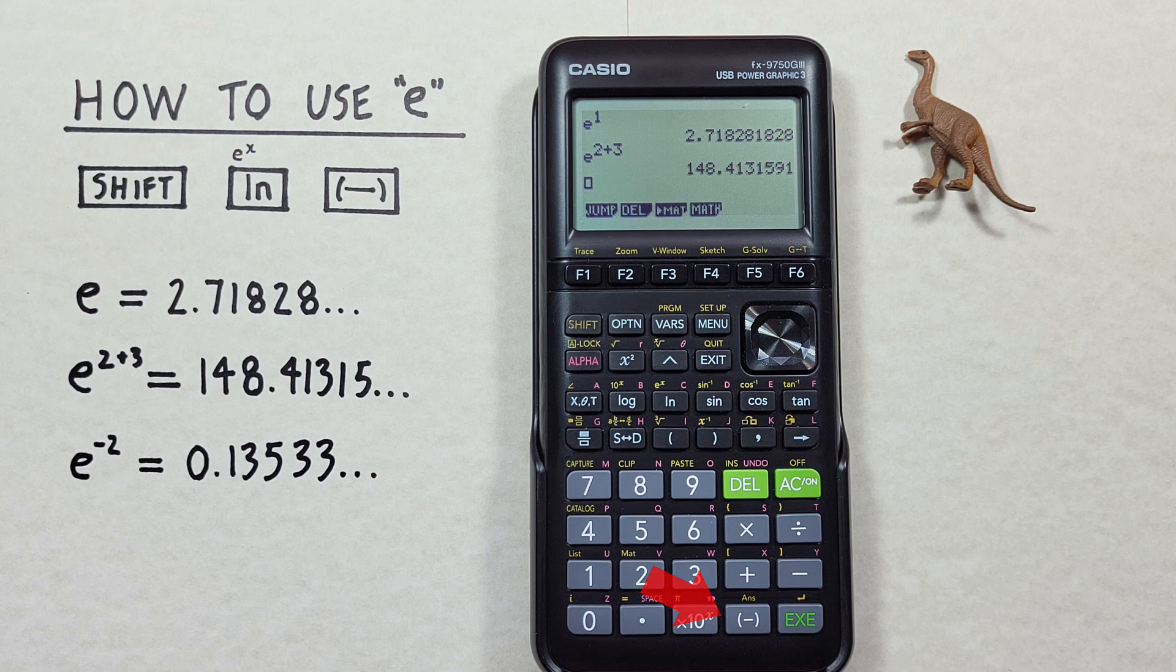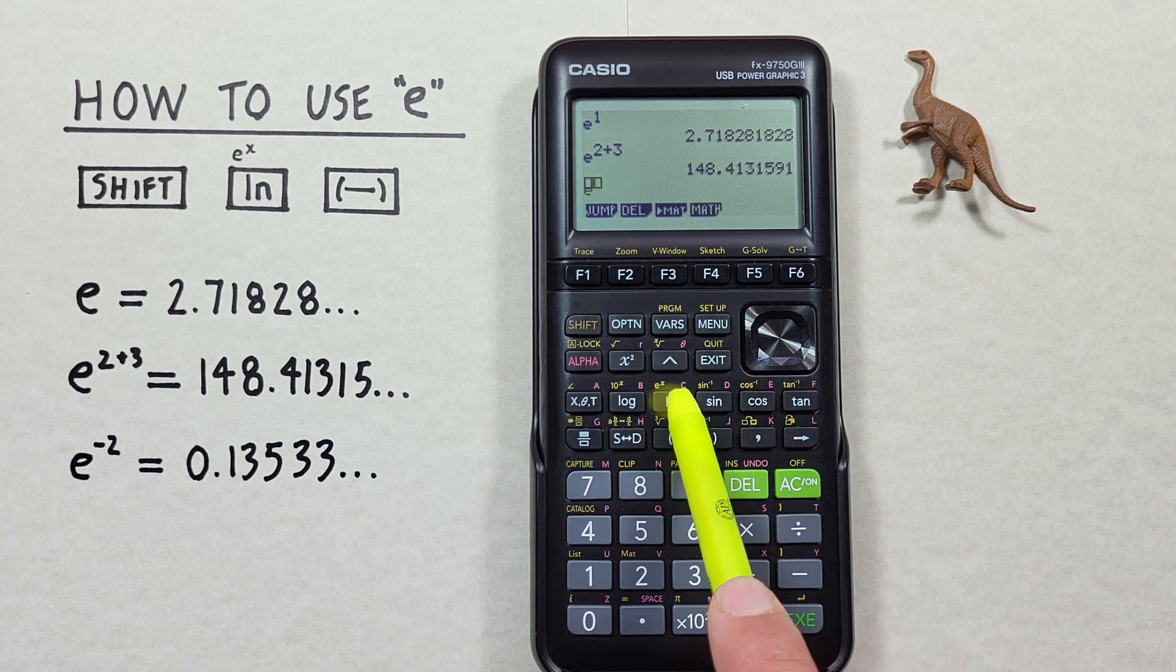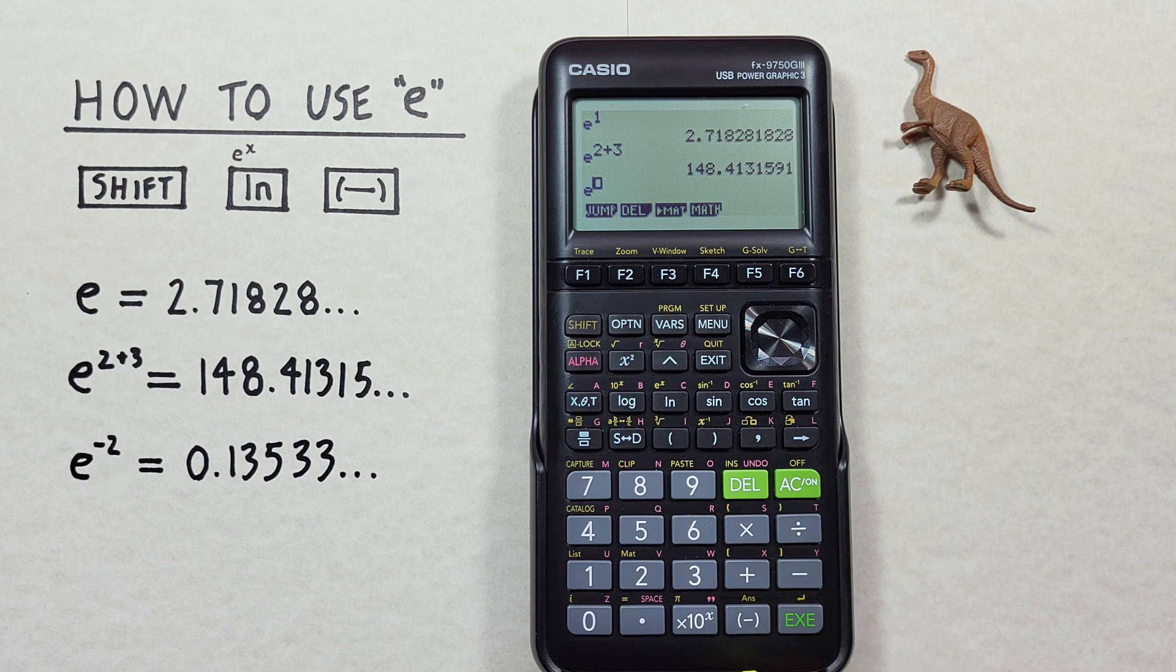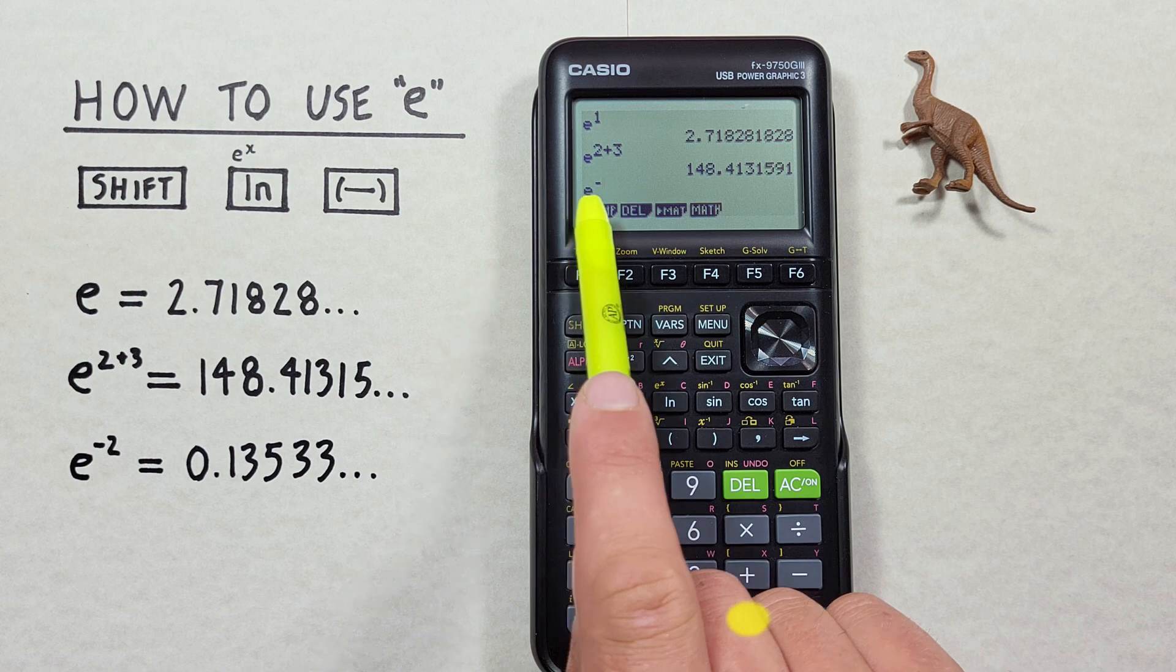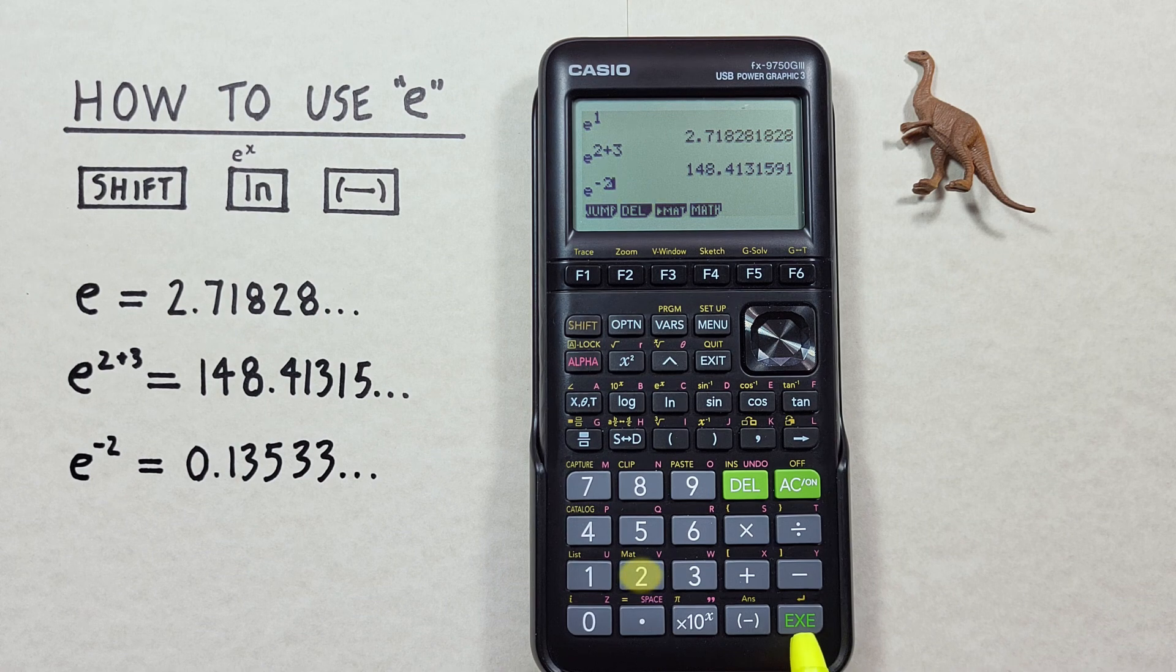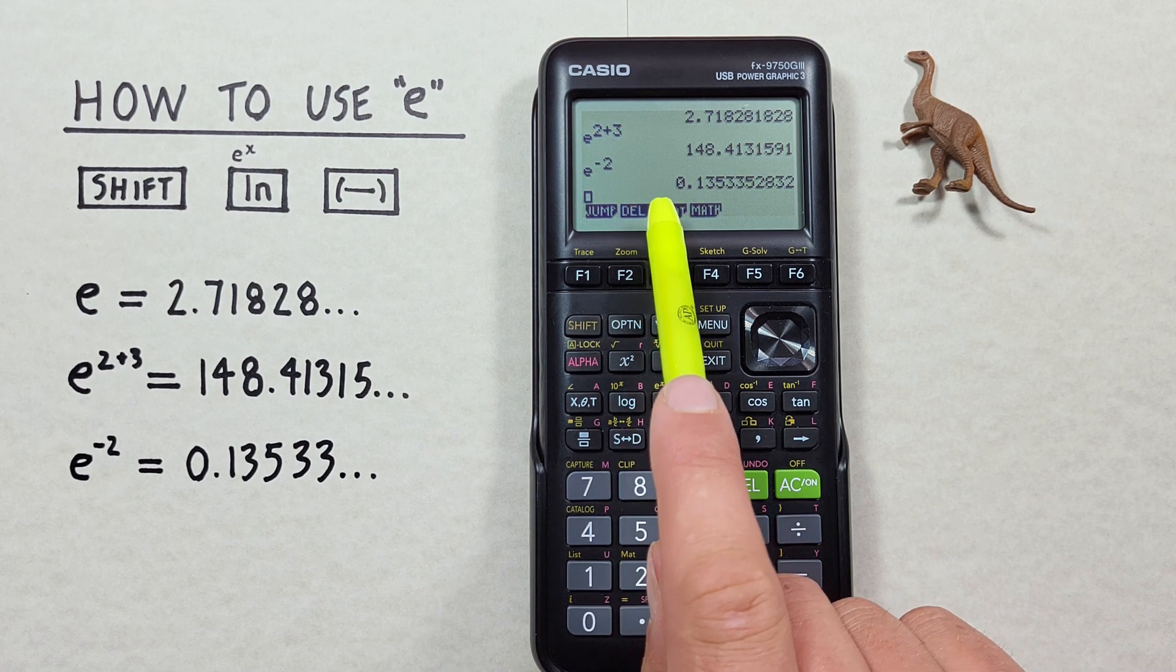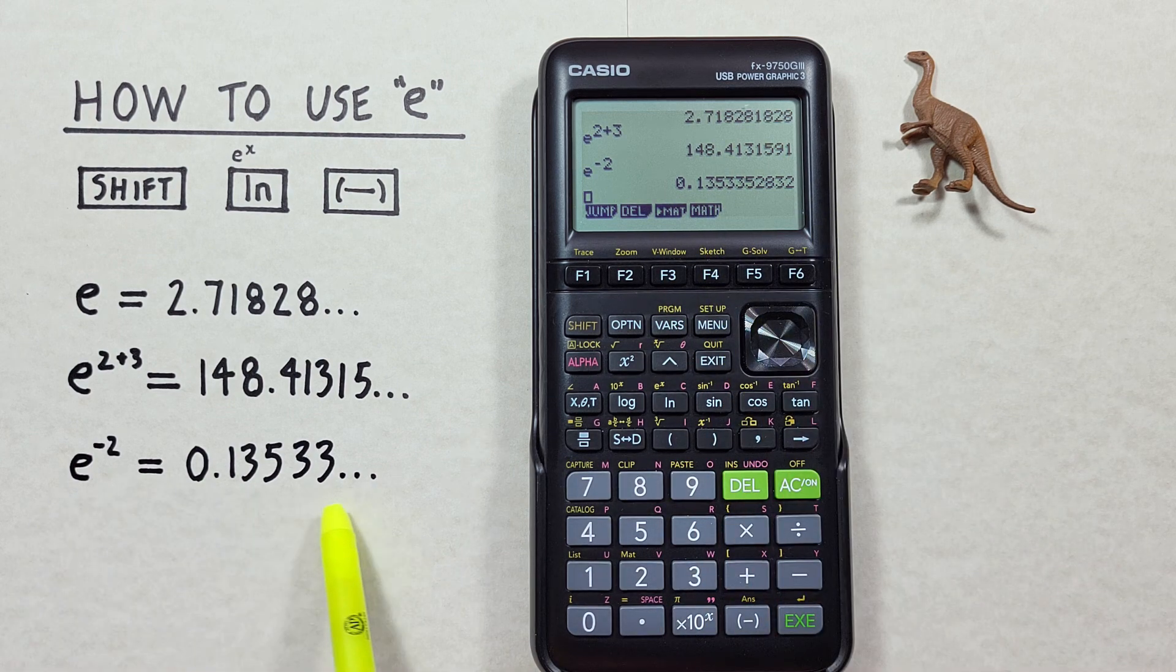So again, we start with the shift and then the ln key, which gives us our E to the exponent. Then we need to use the negative key, not the subtraction, the negative one here, which gives us our negative sign. Then we enter our 2 and hit EXE, which gives us a result of 0.13533 and so on, which is correct.